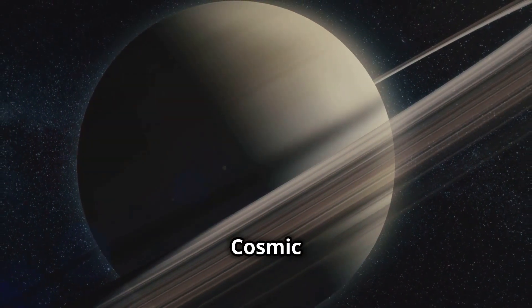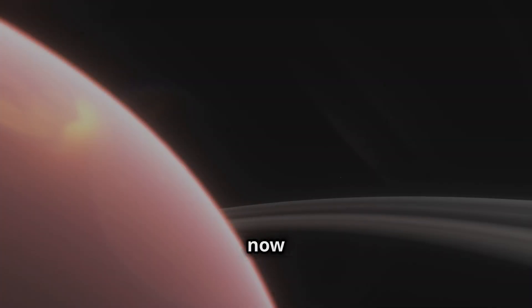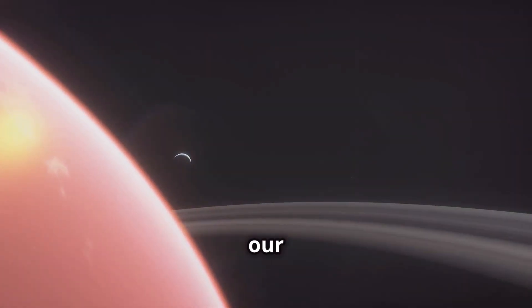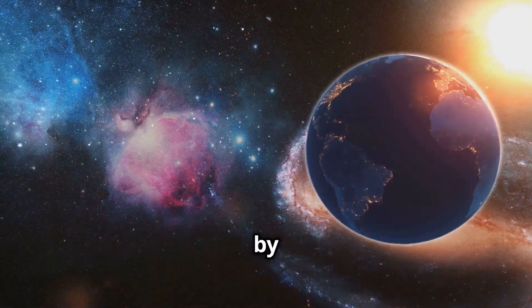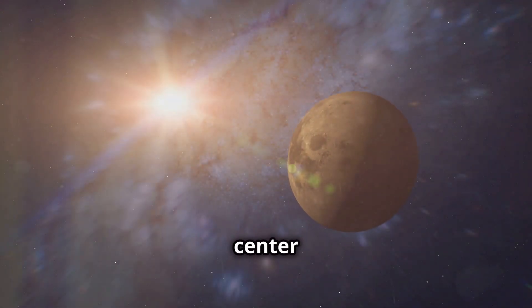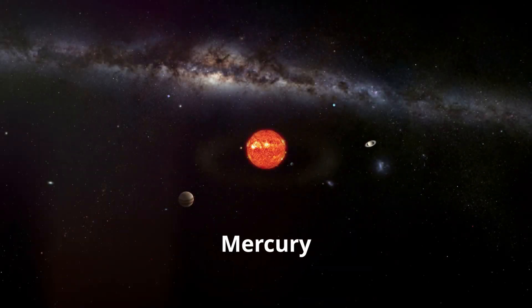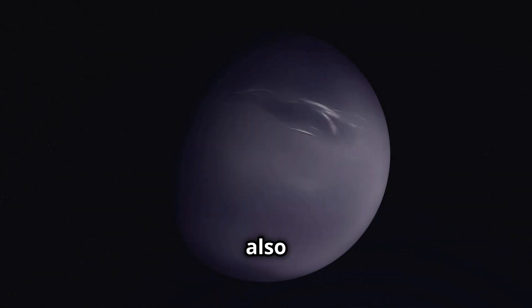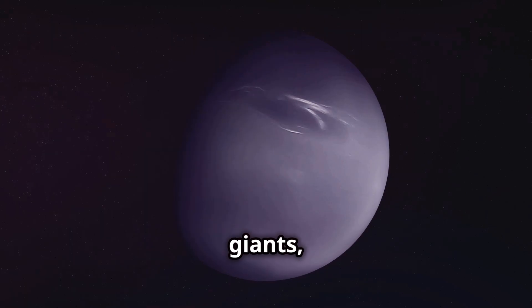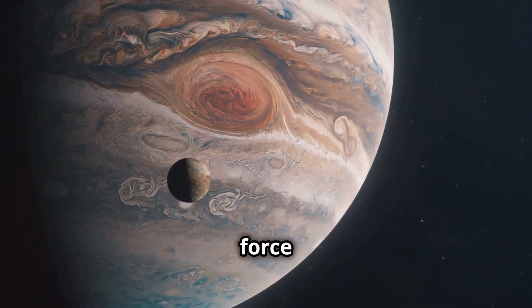Our cosmic backyard: a closer look at the solar system. Let's now return home to our own cosmic backyard, our solar system. Our solar system is a family of celestial objects bound together by the sun's gravity. At the center lies the sun, the star that sustains life on Earth. Orbiting the sun are eight planets from Mercury to Neptune. Our solar system is full of beauty and extremes. We also have moons orbiting the gas giants and comets. Our solar system is a dynamic place, shaped by the force of gravity.